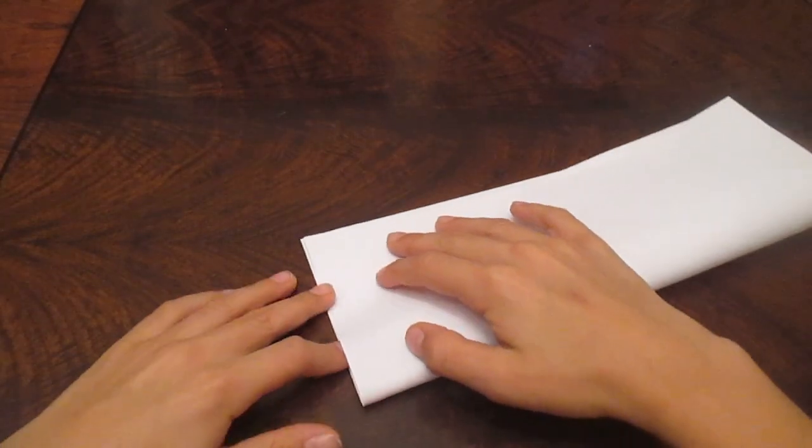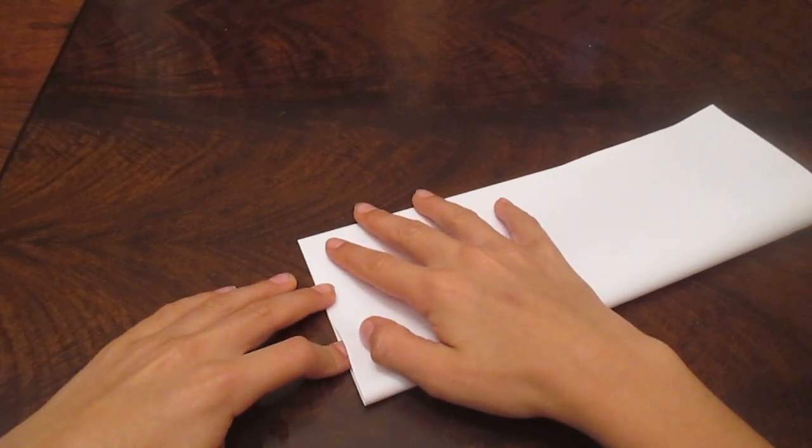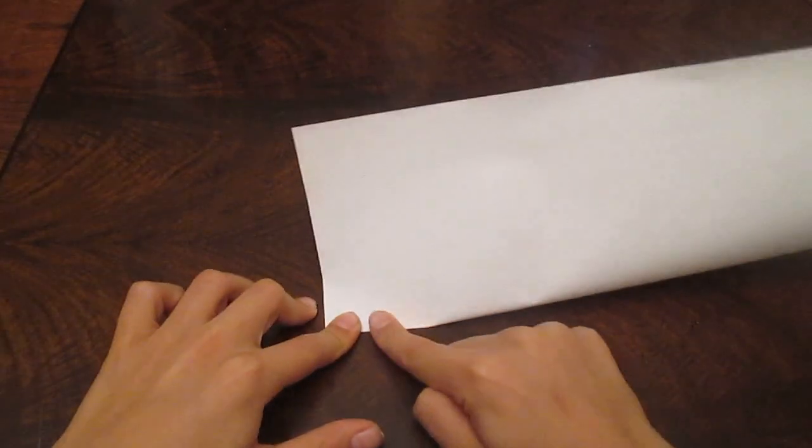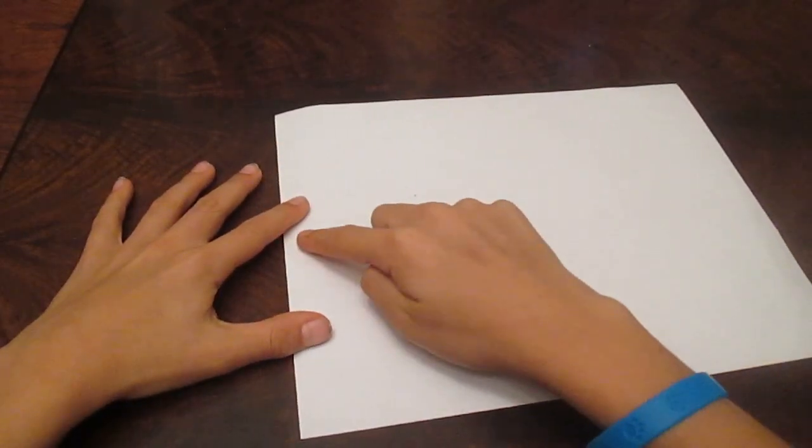First, what you want to do is you want to fold it in half, but you don't want to make a crease. So you want to line it up, and right here, you want to just crease it until right there, like that. And then you can open it back up, and you see you have a line right here, but not down here.